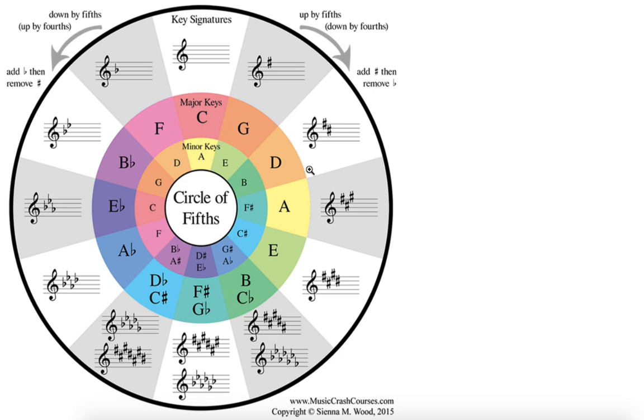So with this graph, we can not only see closely related keys, but we can also just go anywhere and see, like, A flat major is F minor, E flat major is C minor, et cetera. So B flat major is G minor, and we can get all the way across.